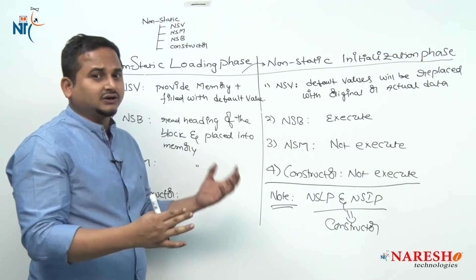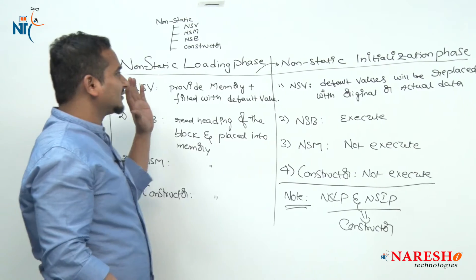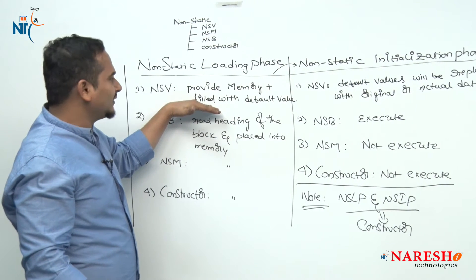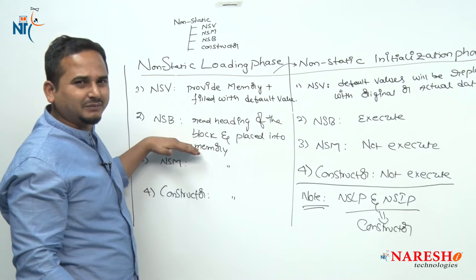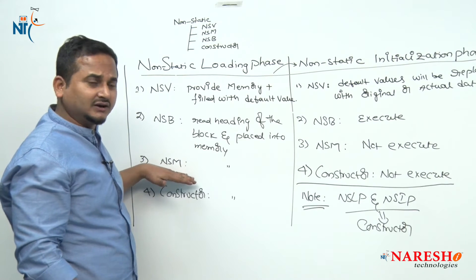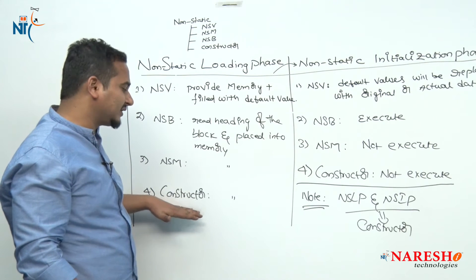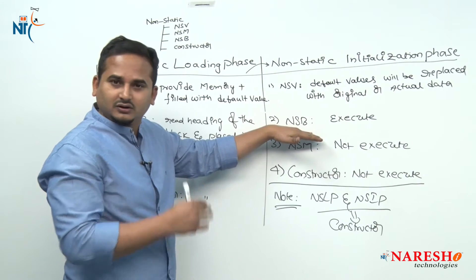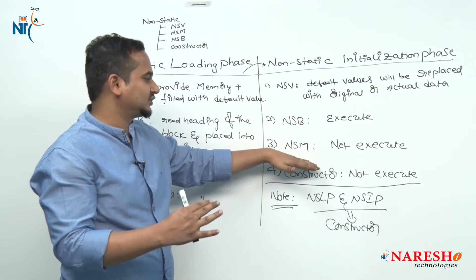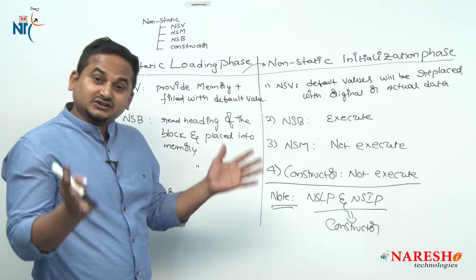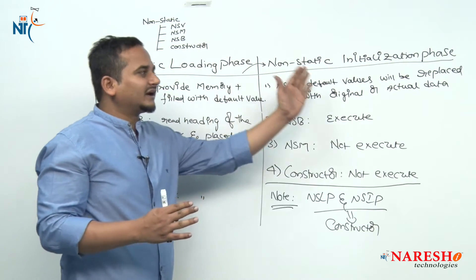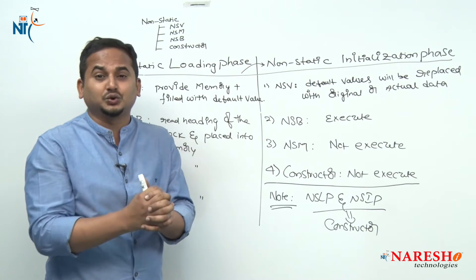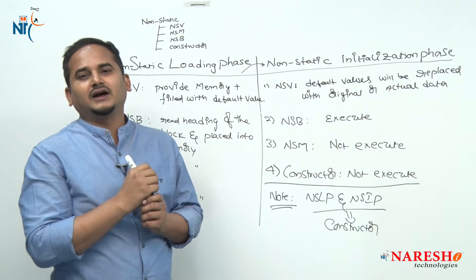Quick review: whenever we create an object, JVM internally does two things — the non-static loading phase and the initialization phase. In the loading phase: variables are provided memory filled with default value; blocks, methods, and constructor headings are read and placed into memory. In the initialization phase: default values are replaced with original values; blocks are executed; methods and constructors are not executed. After both phases complete, control goes to the constructor. Once the constructor executes successfully, the object is successfully created and initialized.